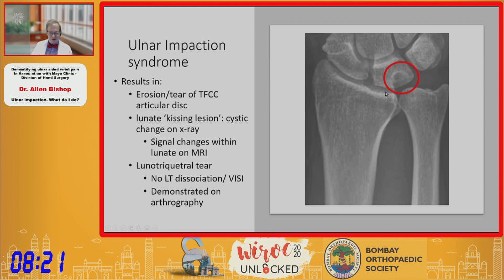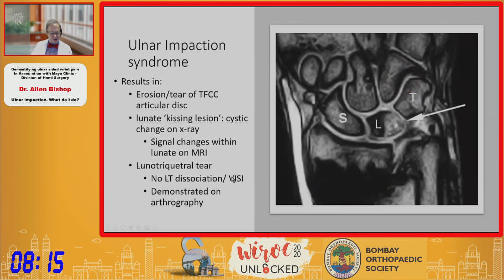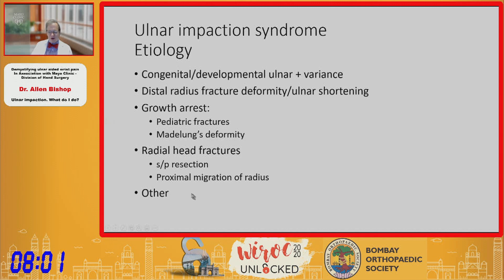There may be a kissing lesion, as seen here in the lunate, with signal changes on MRI corresponding to that. There may be a non-dissociative lunotriquetral tear, or very rarely a volar carpal deformity consistent with LT dissociation. There are a wide variety of causes, from congenital or developmental changes in ulnar length to post-radius fracture shortening and deformity.